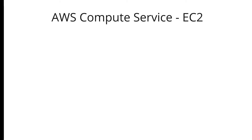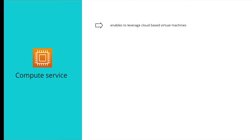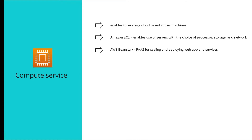On a high level, a compute service is a service that allows you to leverage cloud-based virtual machines for your workloads. Amazon EC2 is a virtual machine that enables us to use servers with our choice of processors, storage, and networking. There is also AWS Elastic Beanstalk, which is a platform as a service that lets you scale and deploy web applications. Then there's AWS Lambda, which enables compute without managing any servers.